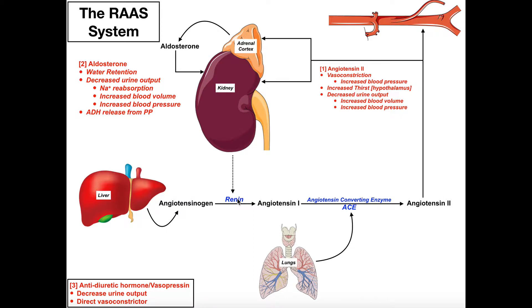In both of those conditions you might see release of renin from the JG cells. The renin release is a graded release — the amount of renin released is proportional to how much the blood actually loses volume. You would only have a little bit of renin release from natural reductions in fluid volume throughout the day, but a lot of renin release whenever you have severe blood loss.